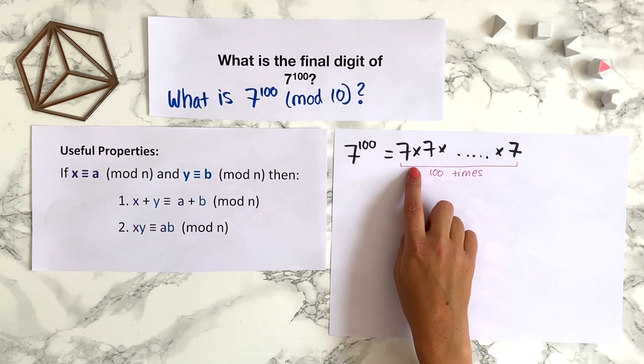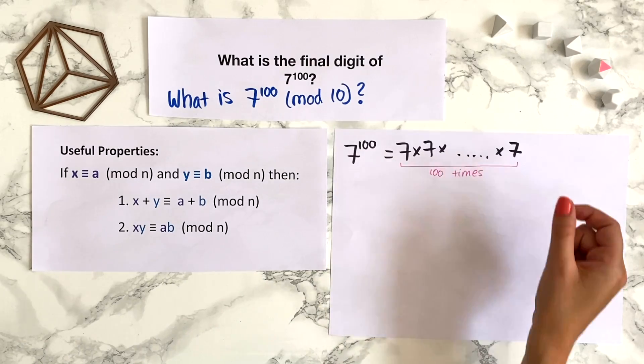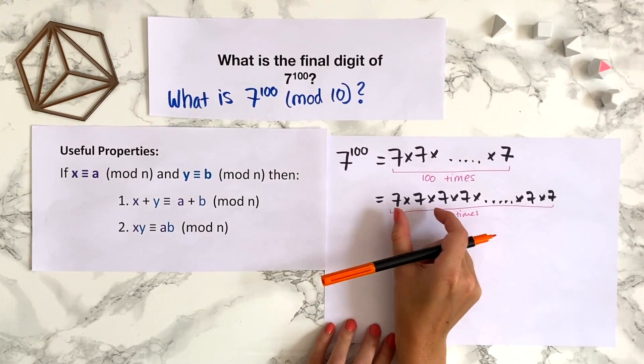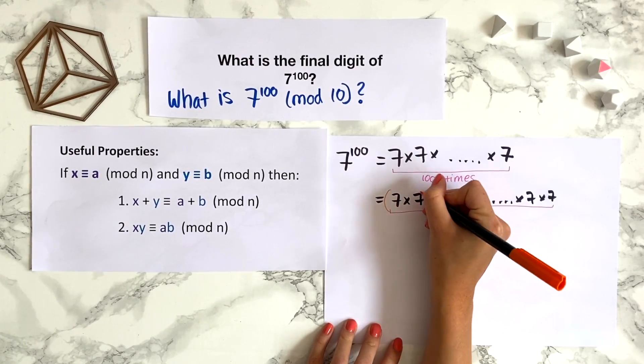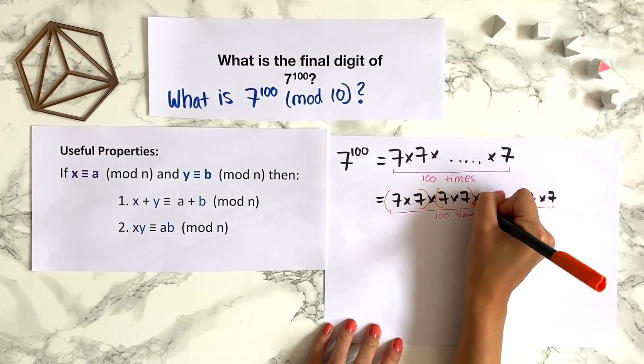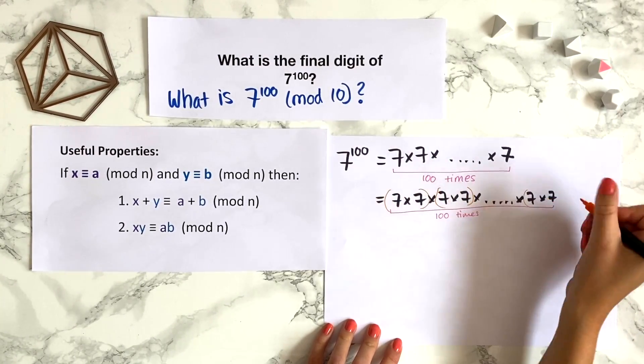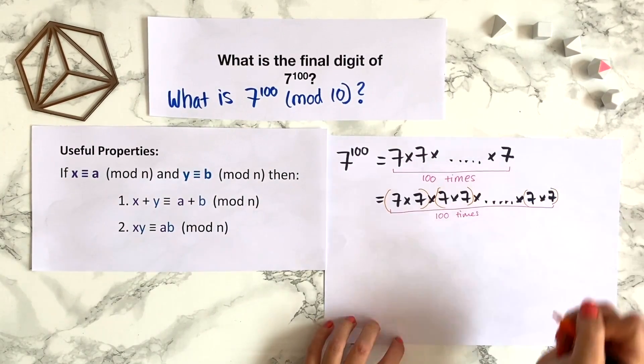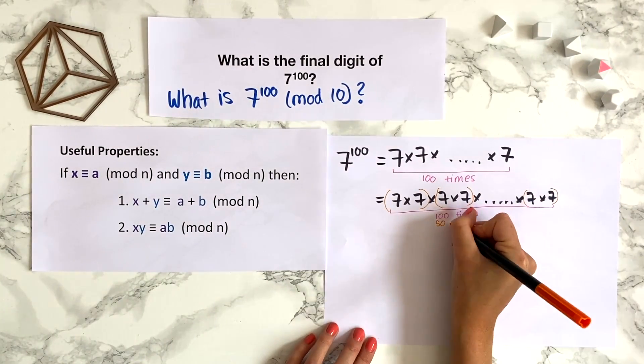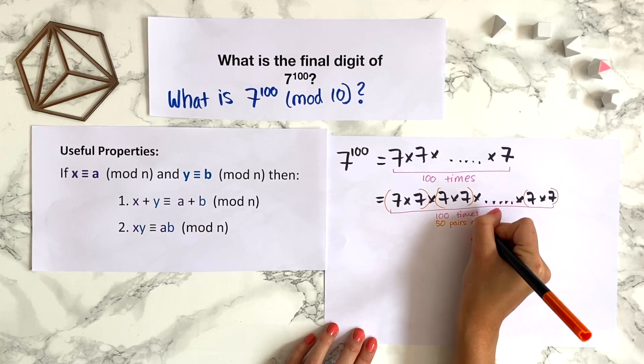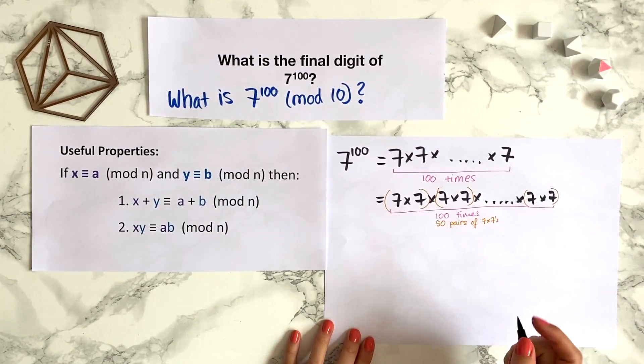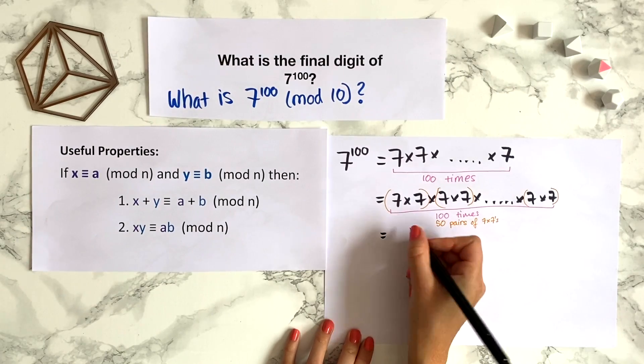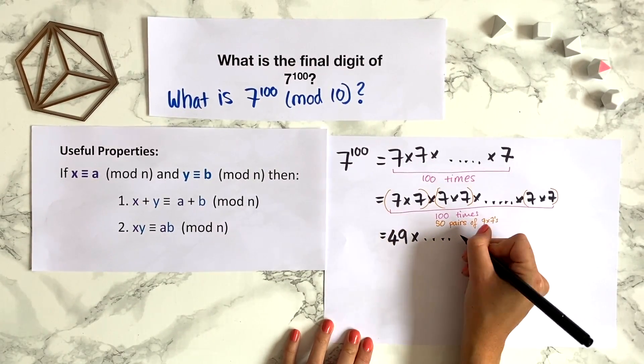7 is already as reduced as possible in mod 10, so this theorem currently isn't looking too helpful. However what we can do is group the 7s in this multiplication. Let's say we pair up the 100 sevens. So we're going to multiply these two 7s together and these two 7s together and so on until we get to the final pair. So there are 50 pairs of 7 times 7s. 7 times 7 is 49, so we can write this as 49 times 49 and so on 50 times.